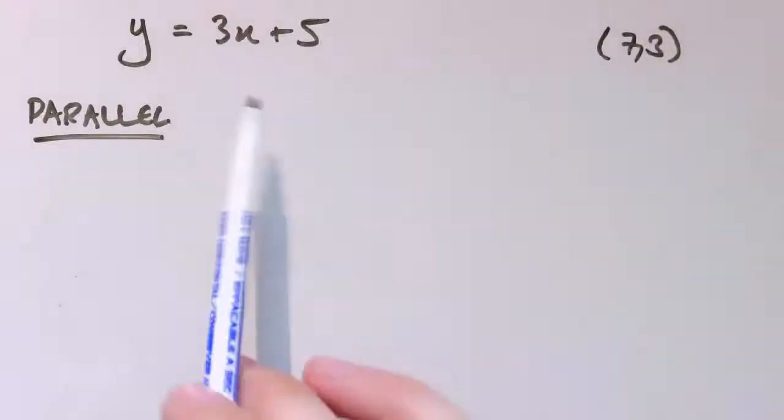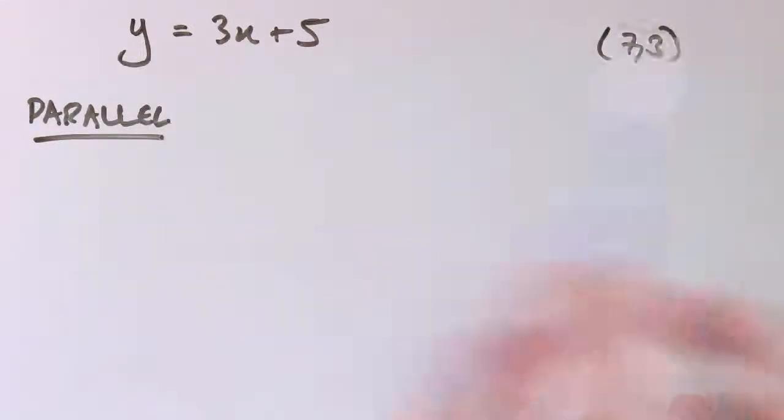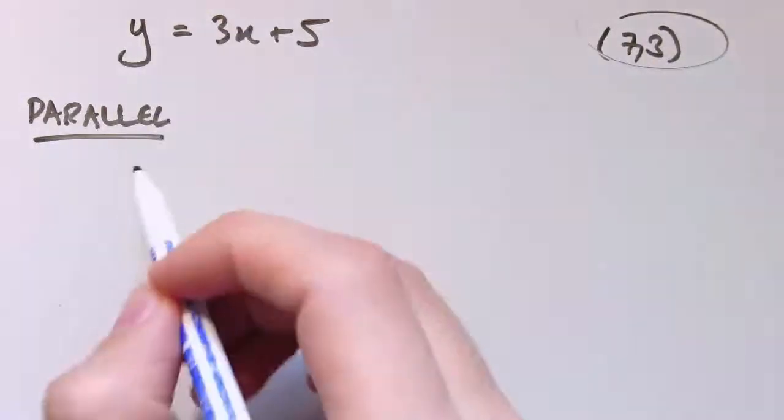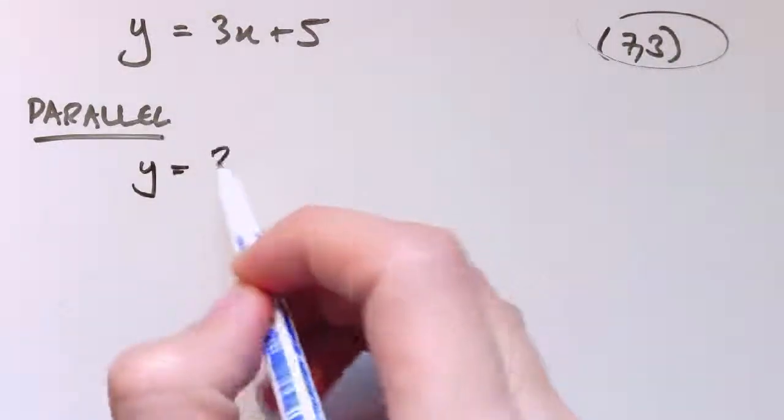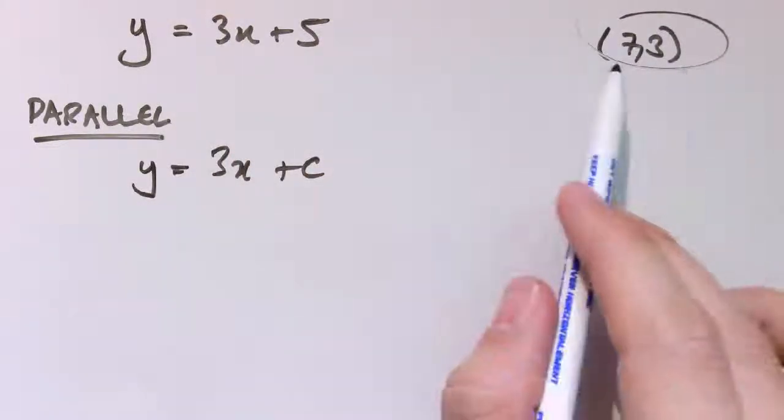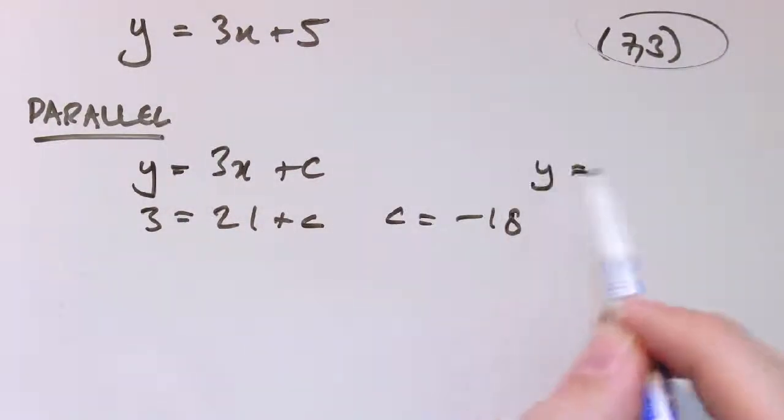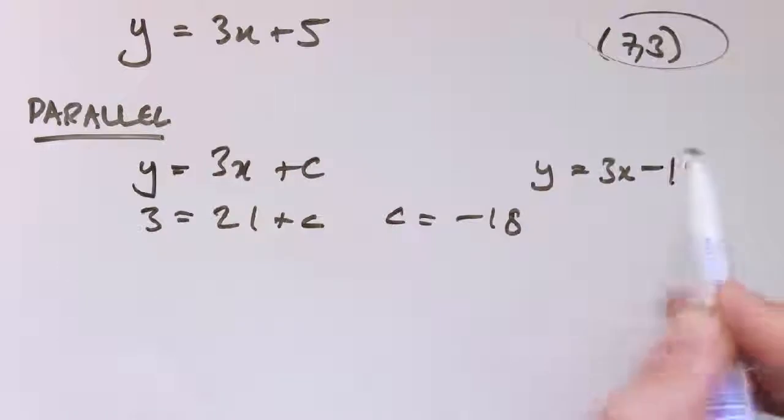So just to summarize what we've done there for things that are in the form y equals mx plus c: y equals 3x plus 5, and I want a line that goes through (7,3). If it's parallel, I just keep the gradient the same, so it's still y equals 3x plus some constant. And I know when x is 7, y equals 3. So this gives me 3 equals 3 times 7 plus c. So c is minus 18. So I get y equals 3x minus 18.